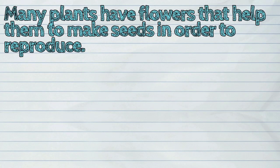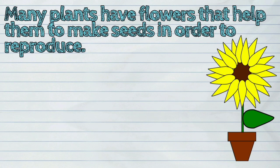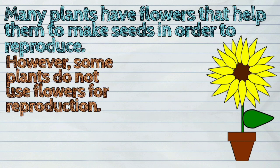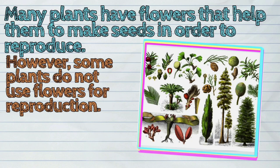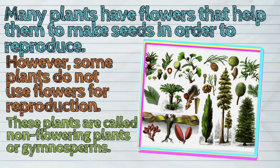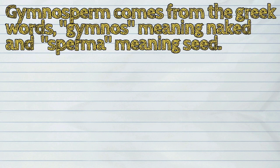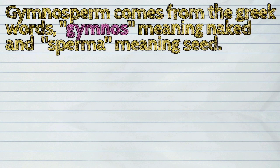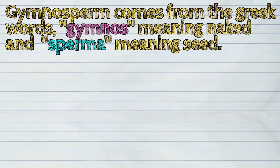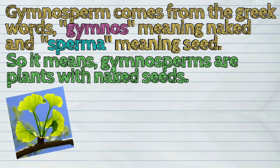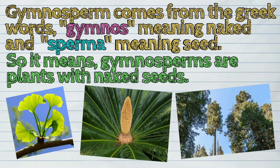Many plants have flowers that help them to make seeds in order to reproduce. However, some plants do not use flowers for reproduction. These plants are called non-flowering plants or gymnosperms. Gymnosperm comes from the Greek words gymnos meaning naked and sperma meaning seed, so it means gymnosperms are plants with naked seeds.